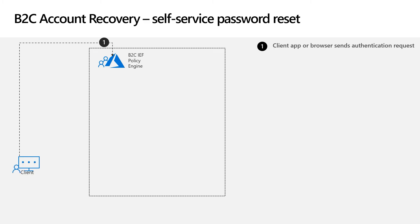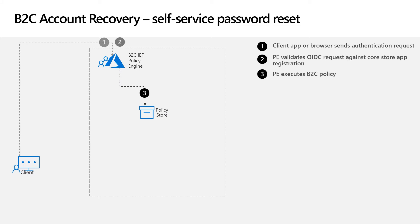First, the registered application triggers the sign-in user flow by using a standard OpenID Connect authentication request. The request has to contain the policy ID parameter of the sign-in policy. The policy engine validates the OpenID Connect request by comparing its parameters to the application registration stored in the core store. The policy engine then executes the policy — behind the scenes, policies are stored in Azure Blob storage, partitioned by tenant. The policy engine evaluates the policy specified in the URL into memory and executes its steps sequentially, the first of which will be to display the sign-in form.